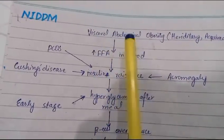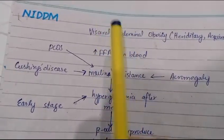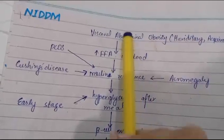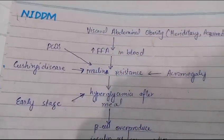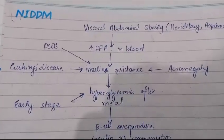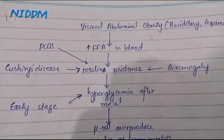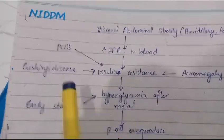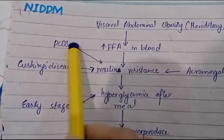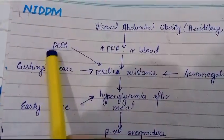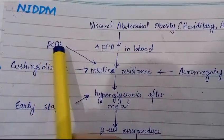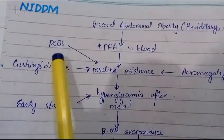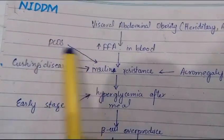Visceral obesity increases the level of lipolysis, and as a result, it increases the level of free fatty acids. Another factor is PCOS — polycystic ovarian syndrome — which causes insulin resistance.